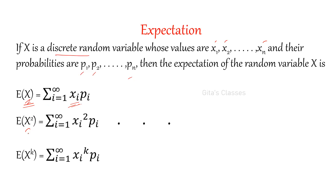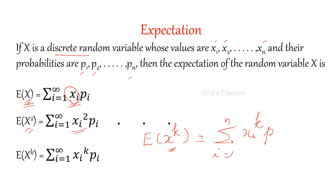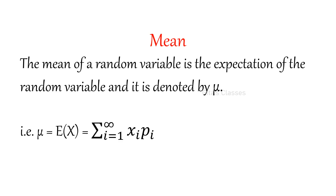Similarly, in place of x if you have x squared, just replace xi by xi squared. In general, E of x power k means sigma i varies from 1 to n of xi power k times pi. This E of x is also called the mean of the random variable x, denoted by the symbol mu. It is nothing but the mathematical expectation: sigma i varies from 1 to infinity of xi times pi.